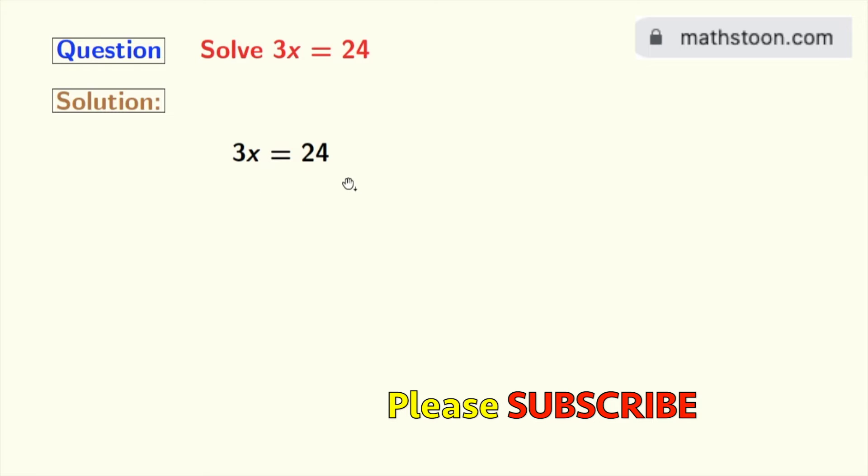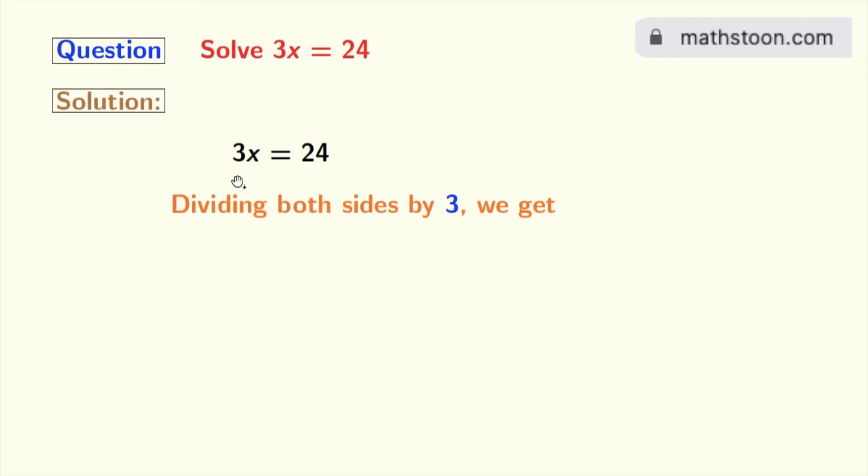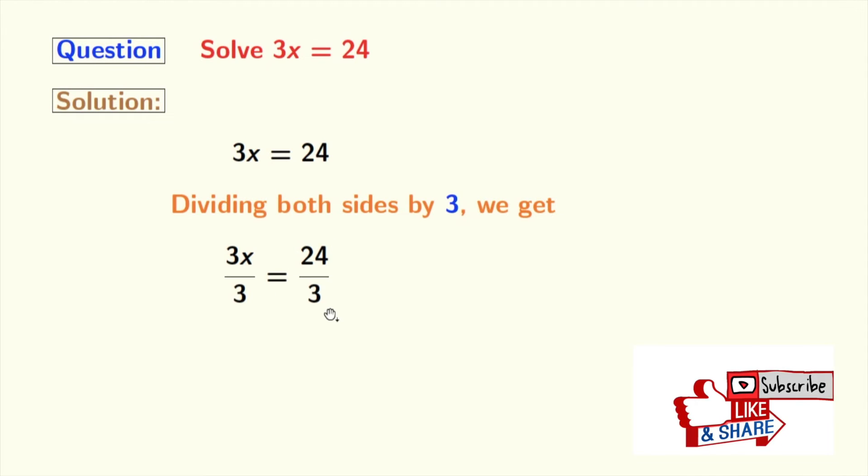That's why we will divide both sides by 3. Doing so we get 3x by 3 is equal to 24 by 3. Now in the left hand side, 3 gets cancelled and we are left with x.